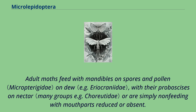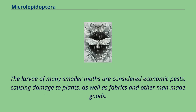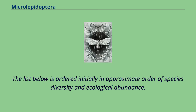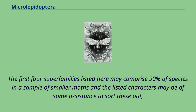Adult moths feed with mandibles on spores and pollen, on dew with their proboscis on nectar, or are simply non-feeding with mouth parts reduced or absent. The larvae of many smaller moths are considered economic pests, causing damage to plants as well as fabrics and other man-made goods. Commonly noticed micros include the plume moth and the various species of clothes moth. The list below is ordered initially in approximate order of species diversity and ecological abundance. The first four superfamilies listed may comprise 90% of species in a sample of smaller moths, and the listed characters may be of some assistance to sort these out.